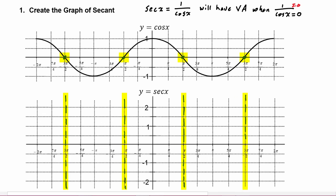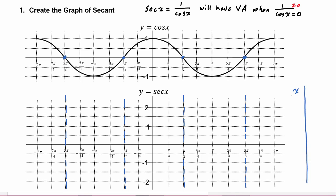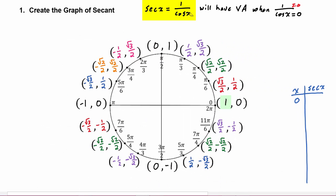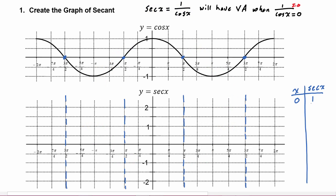We can plot a few points for secant. When x is zero, we know that secant, being one over the cosine, and the cosine of zero is one, so one over one is equal to one. So we know the secant of zero is one.